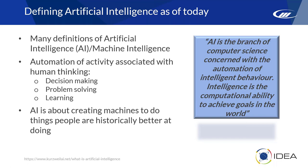When we define artificial intelligence, there are actually many definitions online. It used to be called 'machine intelligence' but nobody really uses that term anymore. The best definition I found: AI is the branch of computer science concerned with the automation of intelligent behavior. Intelligence is the computational ability to achieve goals in the world. Two key aspects: automation is very important, and intelligence — the automation of activity associated with human thinking.